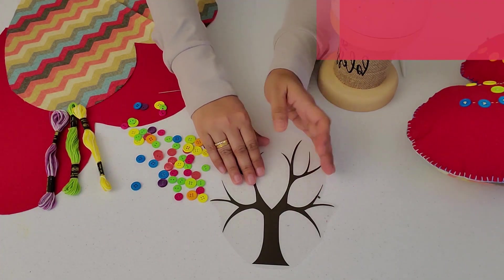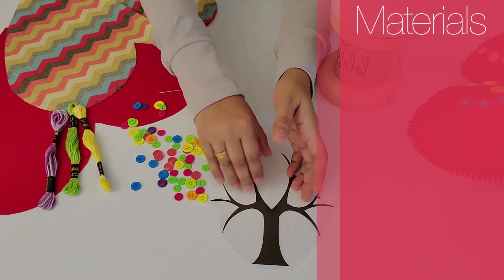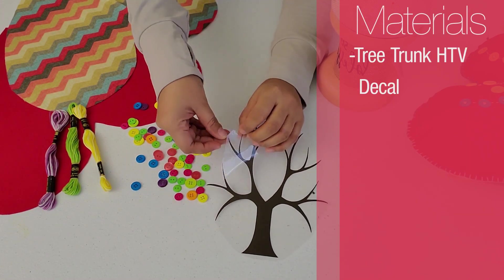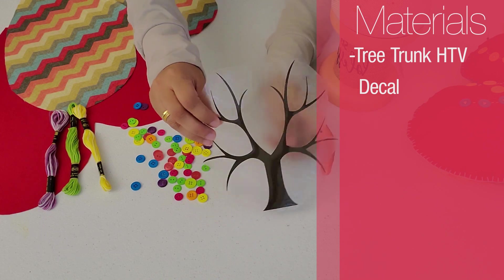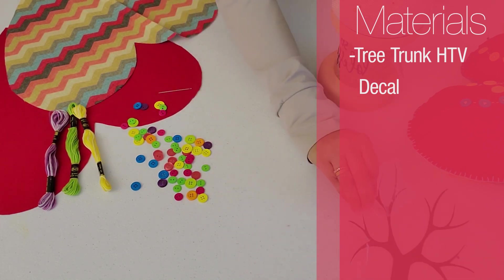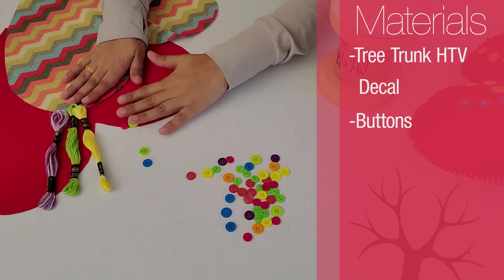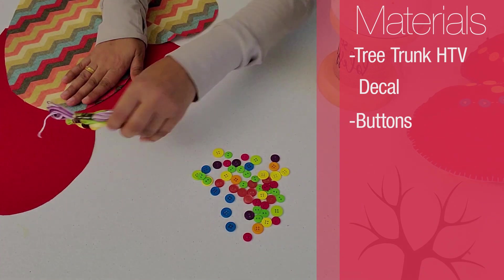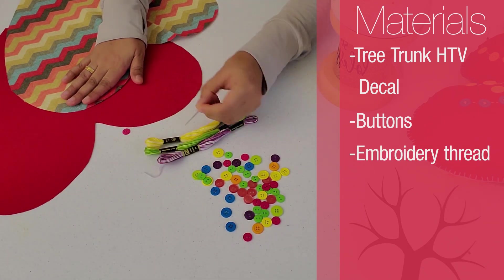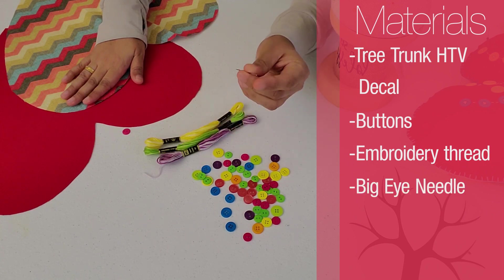We need a tree trunk, HTV decal, and then we need some buttons. We need our embroidery thread, needle, a big eye needle.